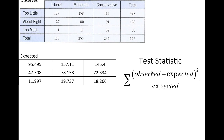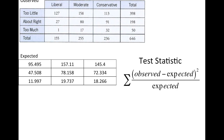Since we rejected the null in this example, there was a big enough statistical difference for us to say that the proportions are not the same throughout each one of those categories. But now — where is the difference? We're going to look at something called the standardized residual. If the distribution is not the same across groups, you should check the standardized residual.